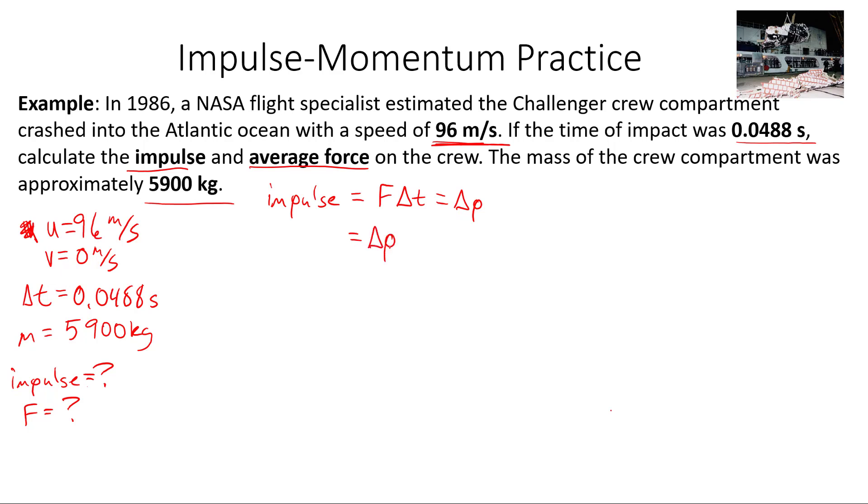Our delta P is just going to be our mass times our change in velocity. So the impulse for our Challenger is going to be 5,900 kilograms times, well, our final velocity is 0, our initial velocity is 96 meters per second. So negative 96 times 5,900, I get my impulse equal to negative 5.67 times 10 to the 5, and the units are newton-seconds. That's also equal to my change in momentum.